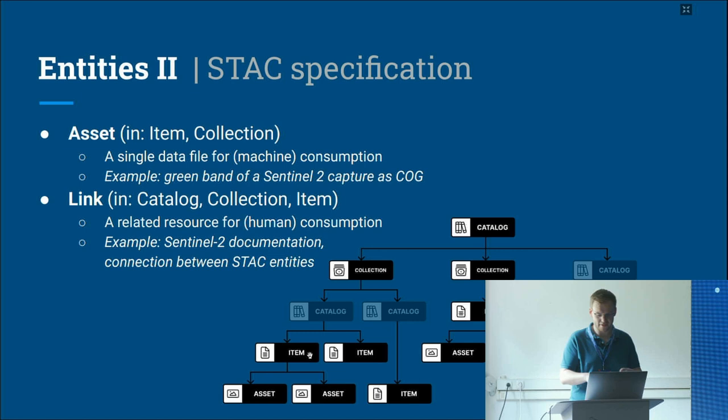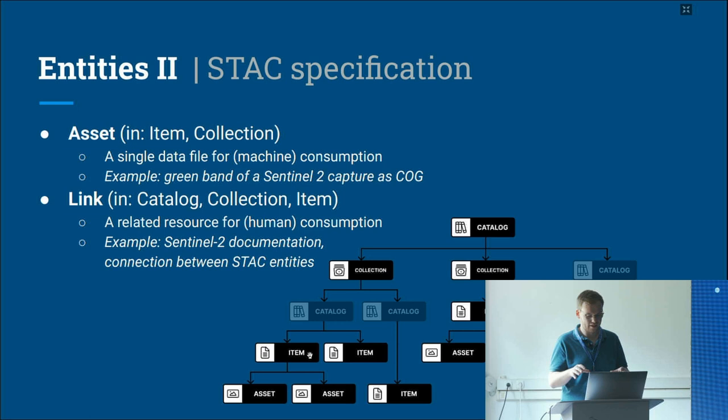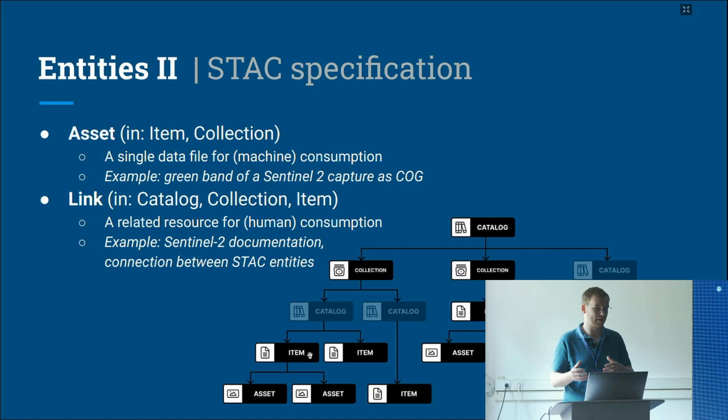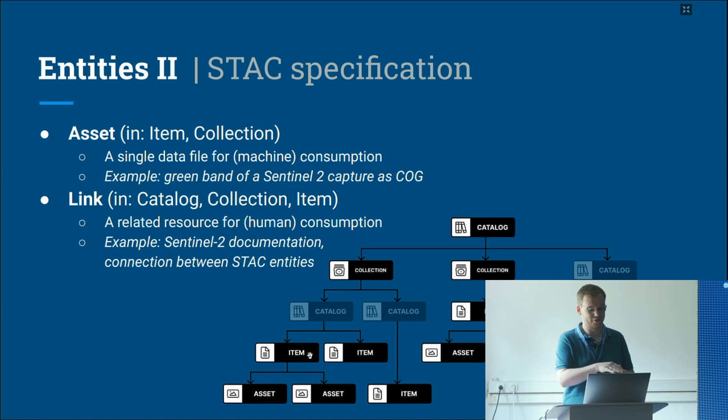Here you see an example of how a static structure could look. You have a root catalogue on top, and underneath you can have various structures combining catalogues and collections, with items at the bottom containing the assets. The catalogues are greyed out because they get flattened out in the API — in the dynamic structure you don't use catalogues for substructuring collections anymore, so you just have collections to search through.